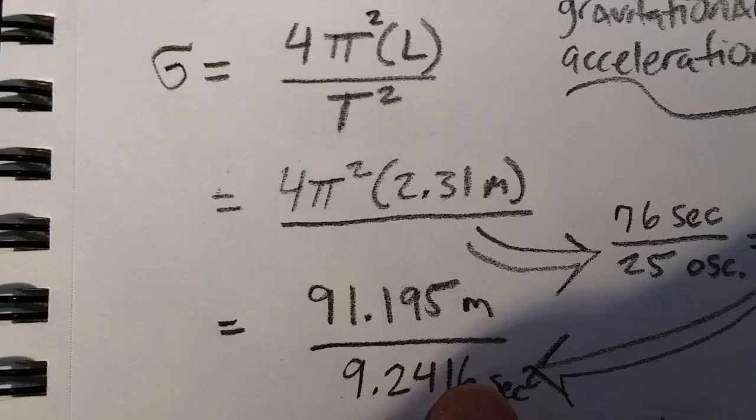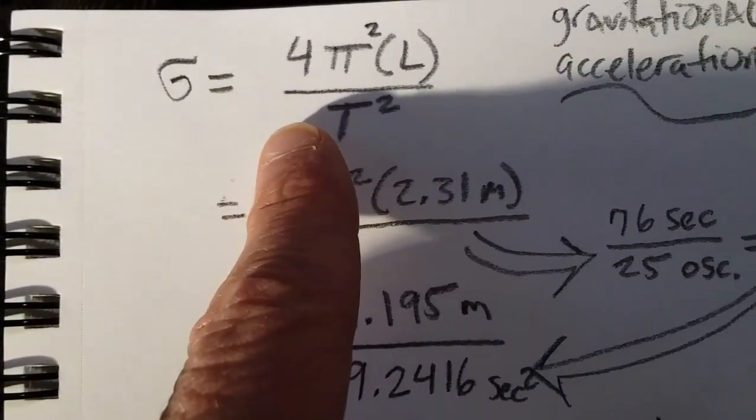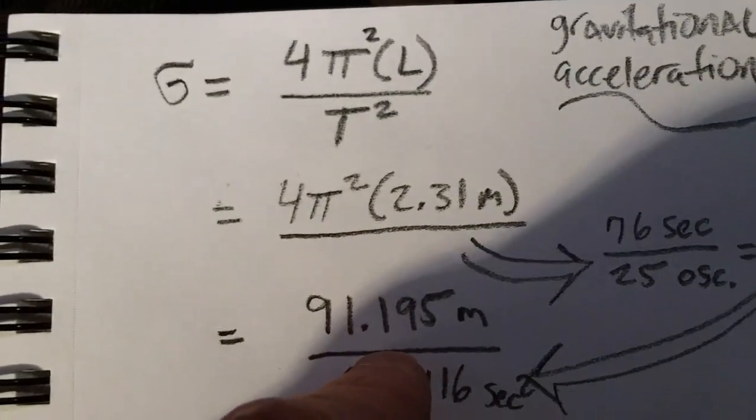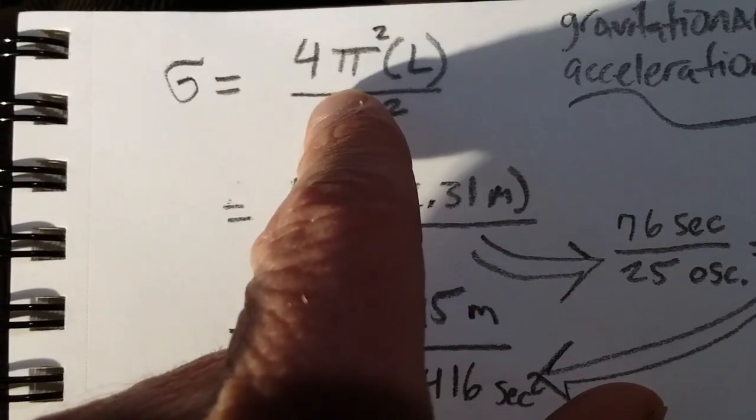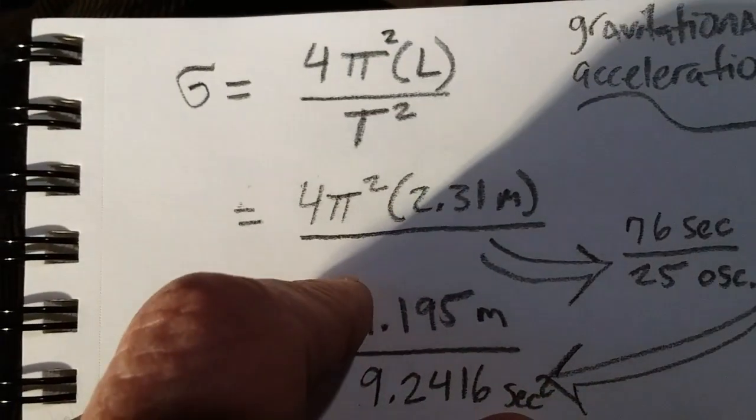So what's going on with the formula is that we're putting the seconds squared, as far as time, into the length times π squared times 4.